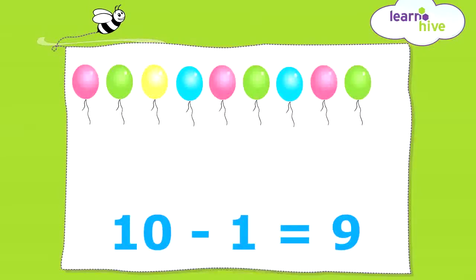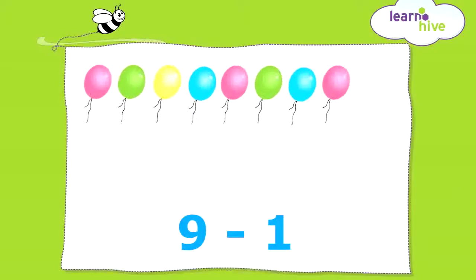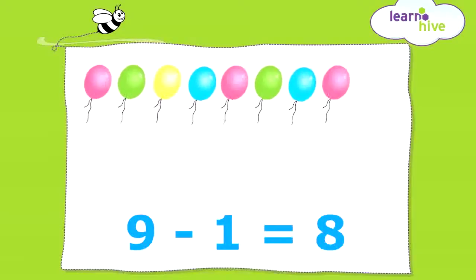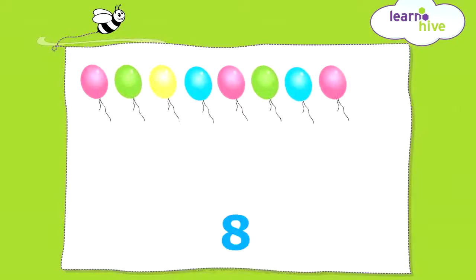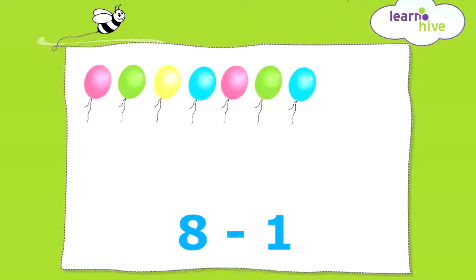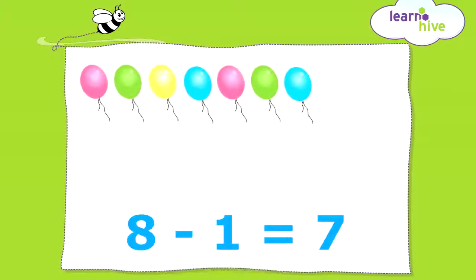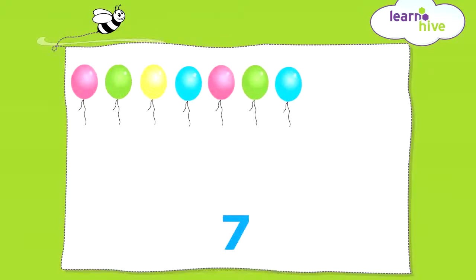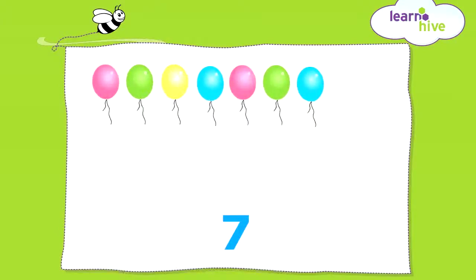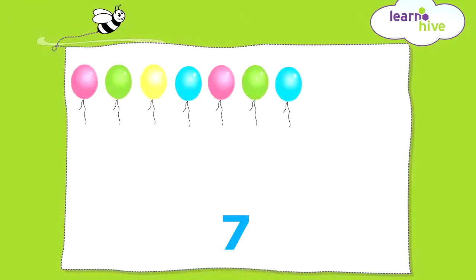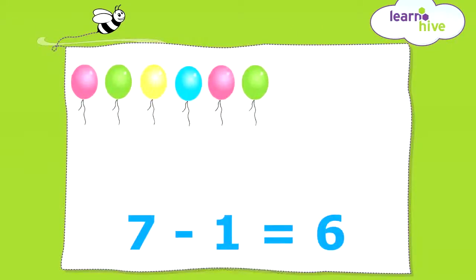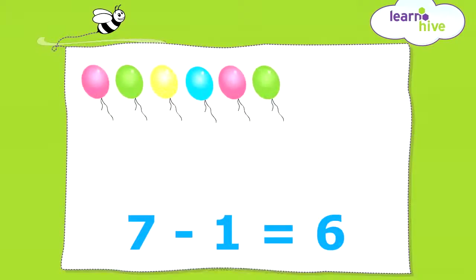One more balloon flies away. Now you have 8 balloons. So when you subtract 1 from 9, you get 8. Another one flies away and you are left with 7. So subtracting 1 from 8 gives you 7. One more balloon flies away. When you subtract 1 from 7, you get 6.